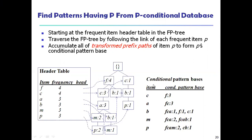These are all the items where we have written them. If C has occurred based on F, that is the conditional pattern base. C is followed by F three times, so we write F as the conditional pattern base for C. If you see A, it is followed by F and C — A is followed by F and C for three times.